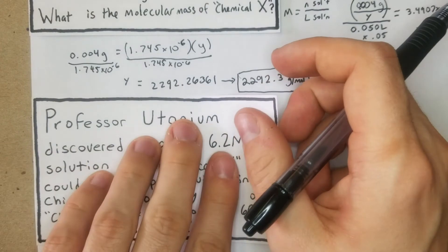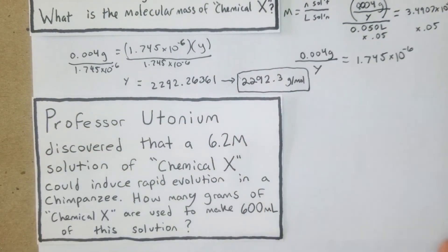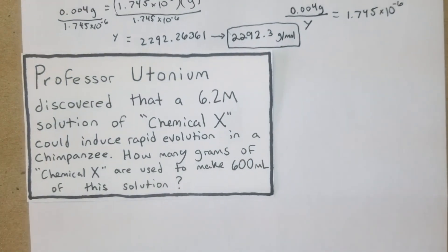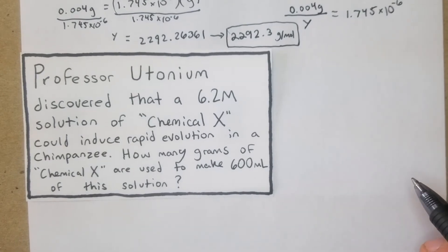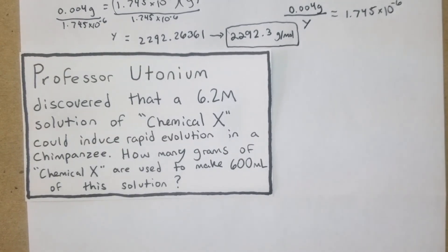Professor Utonium discovered that a 6.2 molar solution of chemical X could induce rapid evolution in a chimpanzee. How many grams of chemical X are used to make 600 mL of this solution?